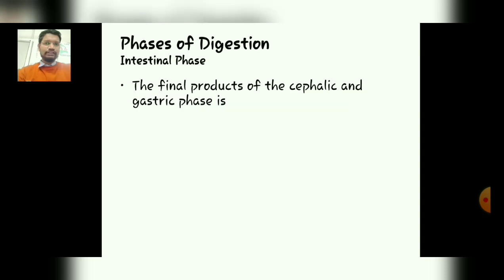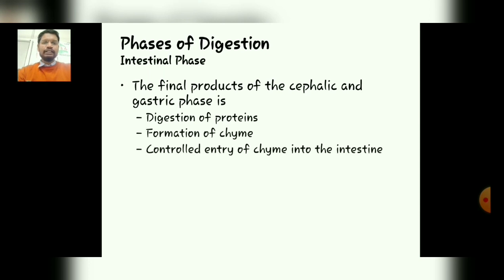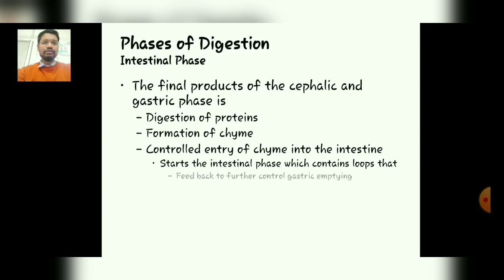Coming to the third phase, which is known as the intestinal phase. The final products of the cephalic and the gastric phase are: first, the digestion of proteins; second, the formation of chyme; and third, the controlled entry of chyme into the intestine, which starts the intestinal phase and contains loops that help in feedback to further control gastric emptying.